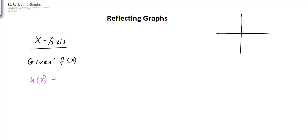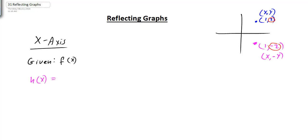If we have a point in the first quadrant and we reflect it about the x-axis, that point is going to be moved down. For example, if this point is over 1, up 2, then after reflection it's still over 1 but now going down 2 units instead of up 2. So where you had coordinates (x, y), it now becomes (x, -y).